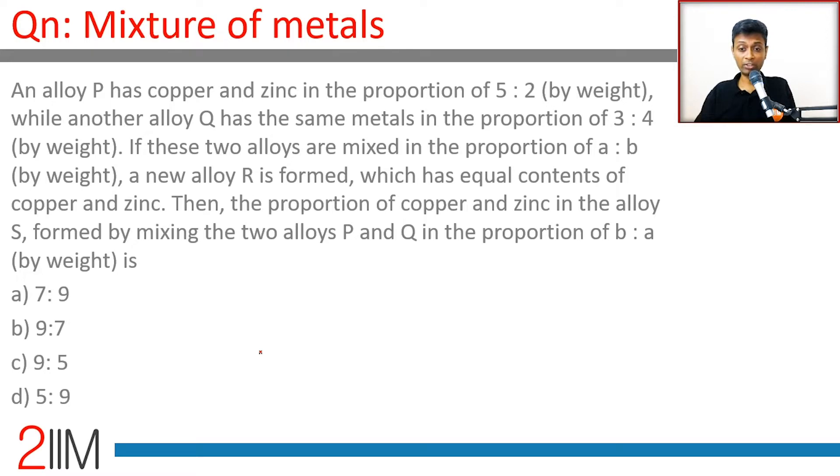Then the proportion of copper and zinc in the alloy S formed by mixing the two alloys P and Q in the ratio b:a. Let's find a:b. So alloy P is 5/7 copper mixed with 3/7 copper gives us 1/2 copper.